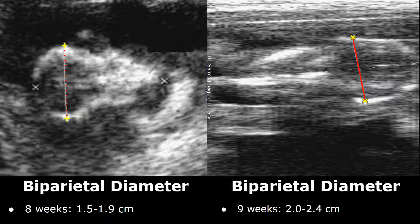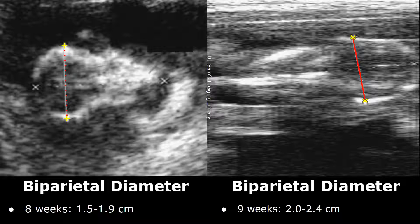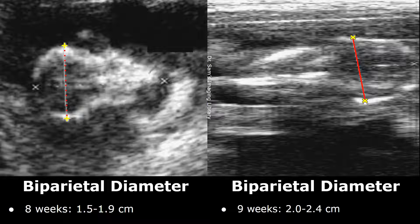Hello everyone, this is Dr. Sam and in this video we will see biparietal diameters throughout the pregnancy. These are just approximate average values that correspond to the gestational age of the fetus. This is just to have an idea of the values of biparietal diameters at specific weeks.